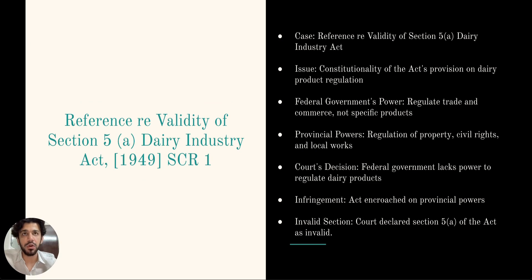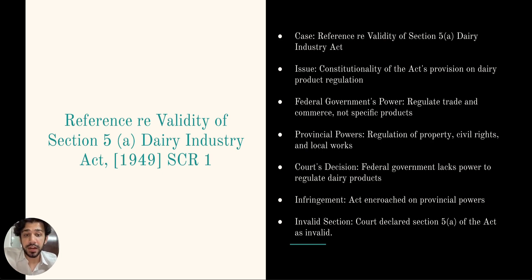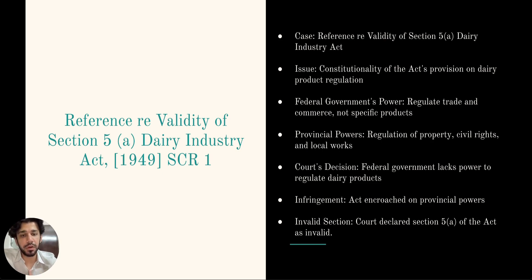The first case law under criminal law: Reference Re Validity of Section 5A, Dairy Industries Act. This case revolves around the constitutionality of a provision within the Dairy Industry Act. The federal government had passed the Dairy Industry Act containing Section 5A, which granted the federal government the authority to regulate production, distribution, and prices of dairy products. However, the act was challenged on the basis that it exceeded the federal government's power under the Constitution Act, encroaching upon the jurisdiction of the provinces. The issue was whether the federal government possessed the power to regulate production, distribution, and prices of dairy products.